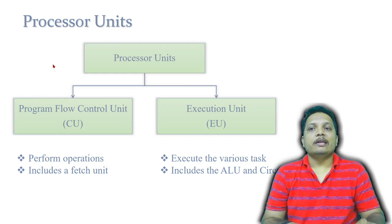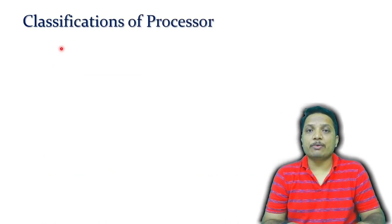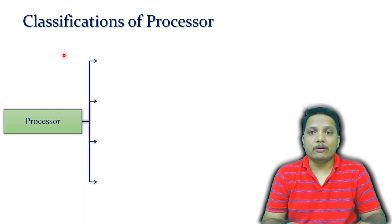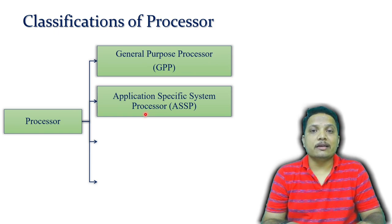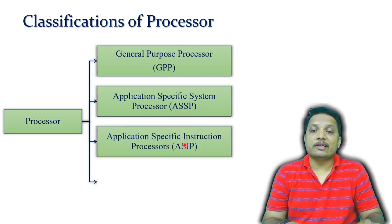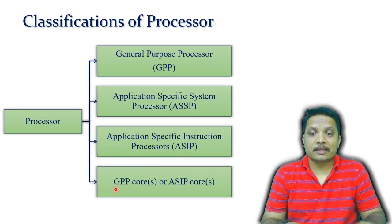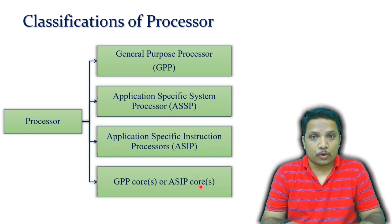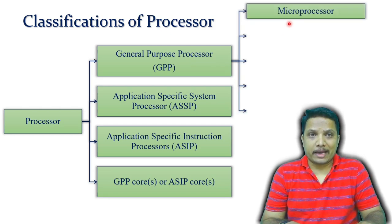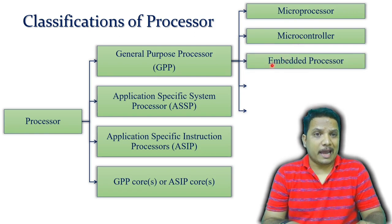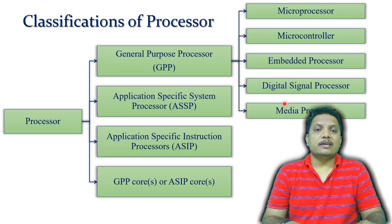Now I'll explain different types of processors. The classification of processors includes: first, General Purpose Processor; second, Application Specific System Processor, in short referred to as ASSP; third, Application Specific Instruction Processor, also referred to as ASIP; and fourth, General Purpose Processor Core, or Application Specific Instruction Processor Core. General Purpose Processor is further subclassified into microprocessor, microcontroller, embedded processor, digital signal processor, and media processor.